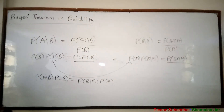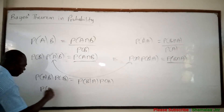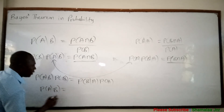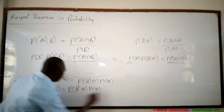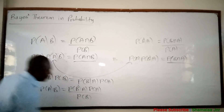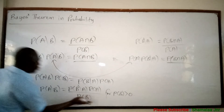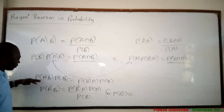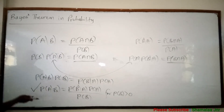This is true. Now viewers, at this point, if you decide to make probability of A given B the subject, you are going to have: probability of A given B is equal to probability of B given A times probability of A, all over probability of B, for probability of B greater than zero. You have divided both sides by probability of B. This is Bayes' theorem.